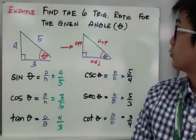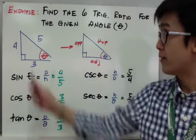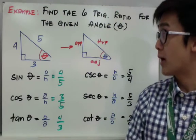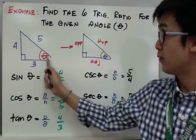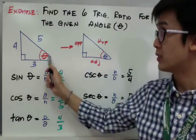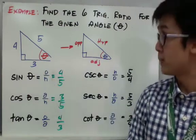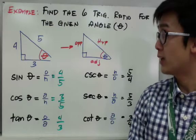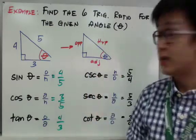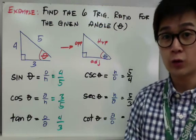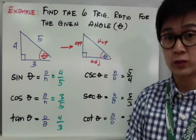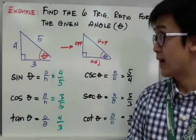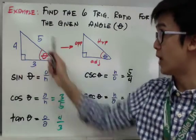Now let's find the six trig ratios of a given angle. Given a right triangle with side lengths provided: the hypotenuse is 5, the opposite side from the given angle is 4, and the adjacent side is 3. We'll use the formulas for the six trig ratios. For sine theta, the formula is opposite over hypotenuse, so by looking at the triangle, sine theta equals 4 over 5.